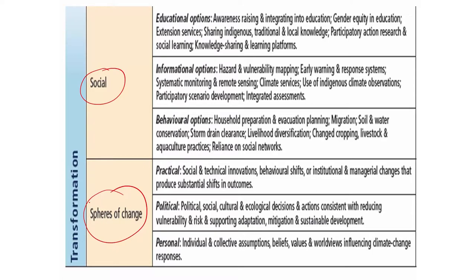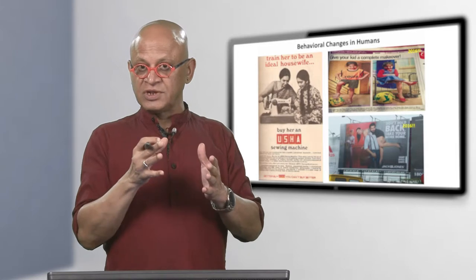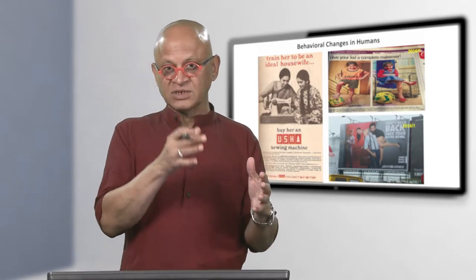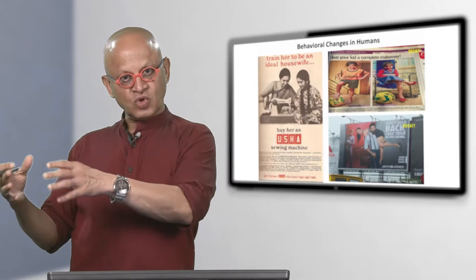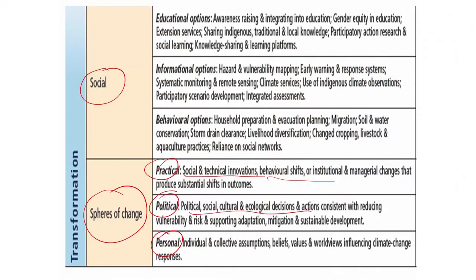Spheres of change include practical, political, and personal spheres, with social and technical innovations, behavioral shifts, institutional and managerial changes, and political, social, cultural, and ecological decisions. Leaders of some nations considered friendly to climate awareness were always constrained by the choices available - the political situation always requires winning the next election, showing you are doing something good, but being constrained in other ways. The choices may not be as beneficial as you think, and that is the same even at the personal level.